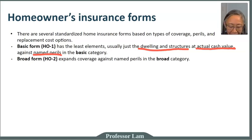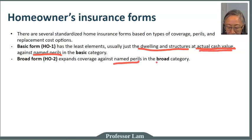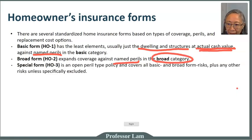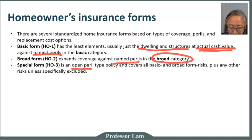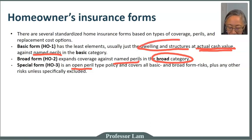Form HO-2 is still a named peril policy at actual cash value, but expanded to the broad category of perils. Special Form HO-3 changes it from named peril to open peril, though it still covers just the dwelling and structure at cash value.